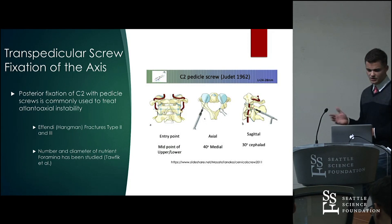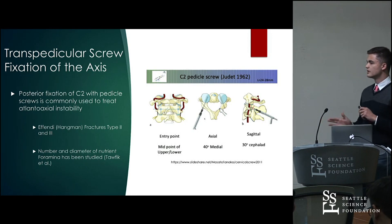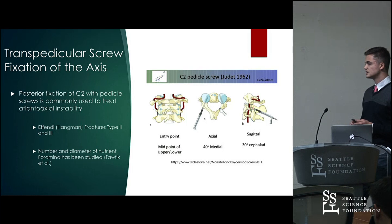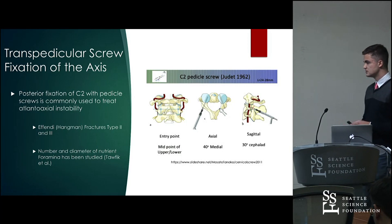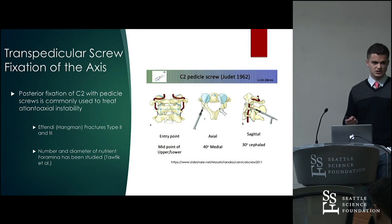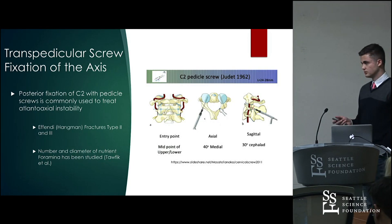There are already studies out there that talk about the number of foramina present bilaterally on C2 and also the diameter of these nutrient foramina. So we're focusing more on the relationship of the deep cervical artery to the nutrient foramina rather than the foramina themselves.